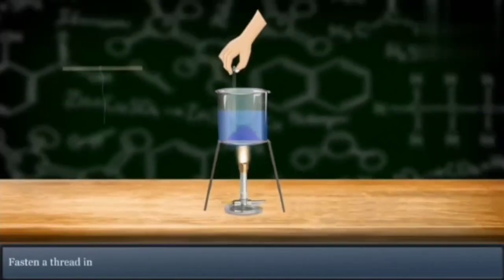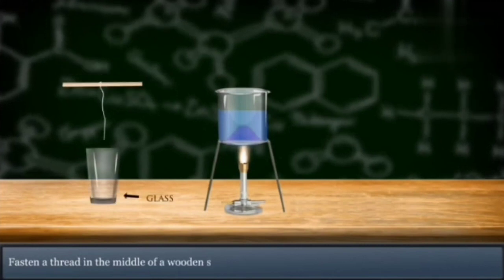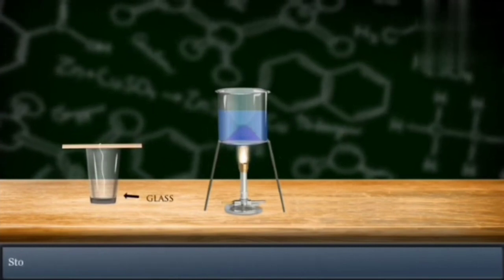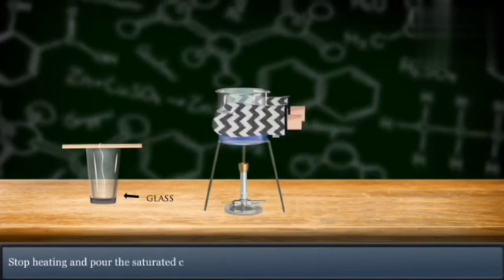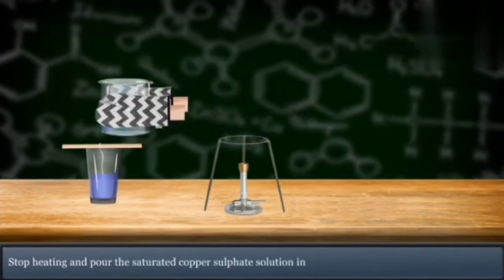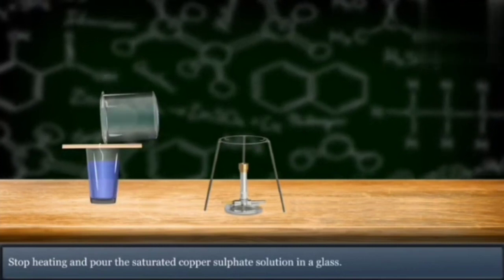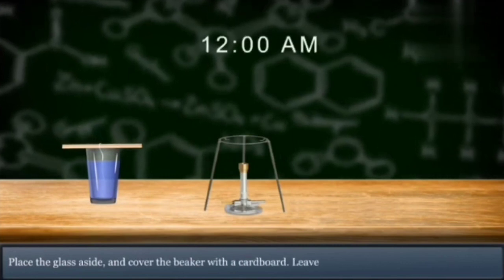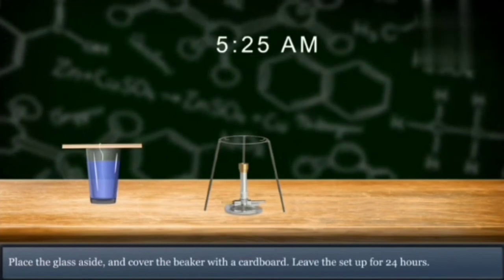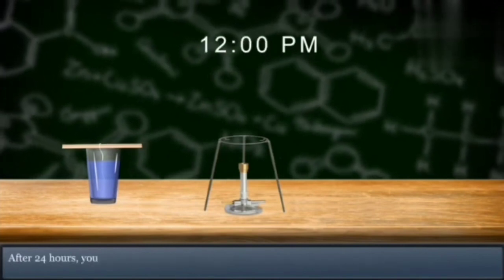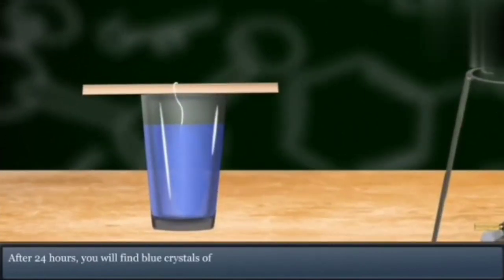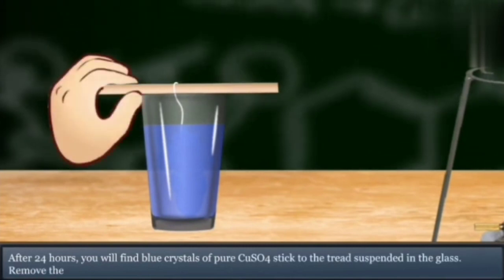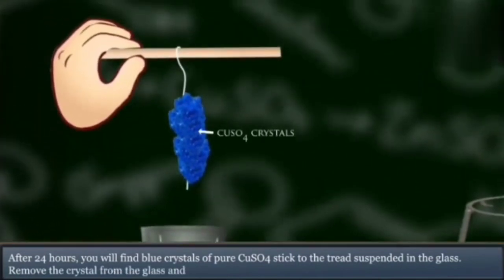Fasten a thread in the middle of a wooden stick and suspend it in a glass. Stop heating and pour the saturated copper sulfate solution into the glass. Cover it with cardboard and cool the solution. Leave the setup for 24 hours. After 24 hours, you will find blue crystals of pure copper sulfate at the base of the beaker.